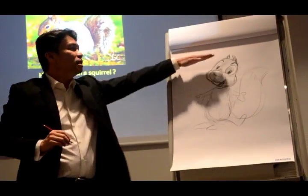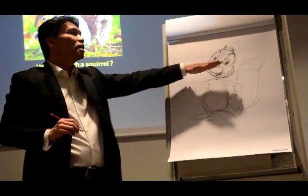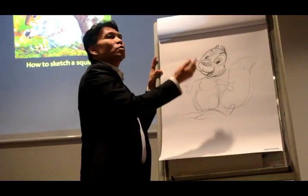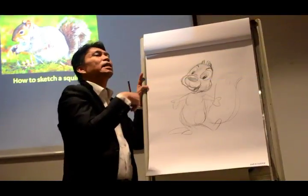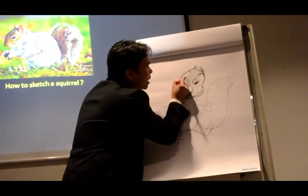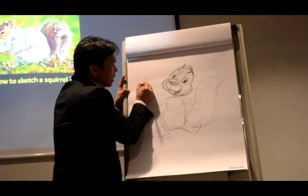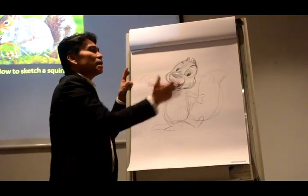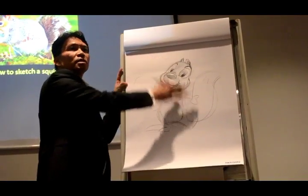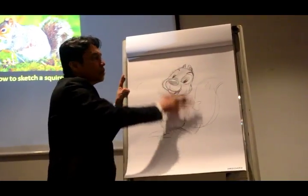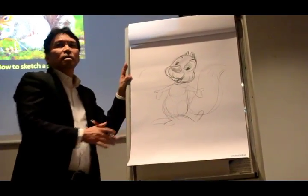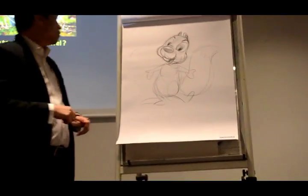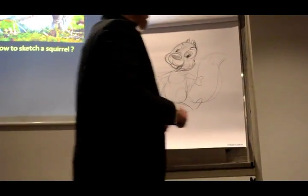Then you do the details like what I'm doing. From here, the animator will take this portion, then do what they call it — the inking up. They will take only one outline, so that's why you can see a very nicely drawn image. Actually they are tracing it from the original — the original is normally very rough like this. So this is what the Disney style of drawing that I want to show you.